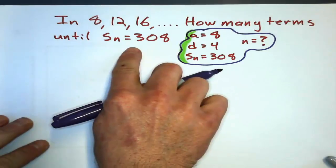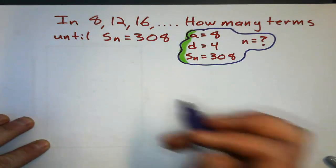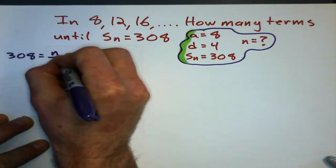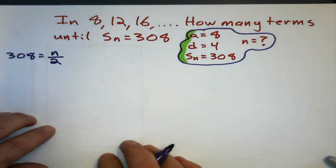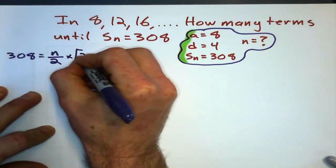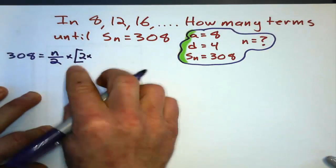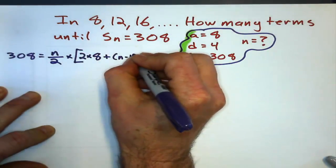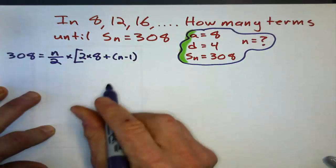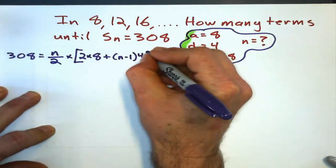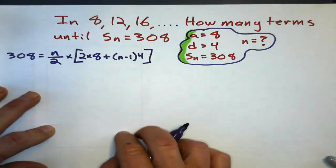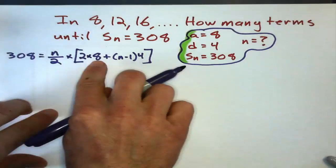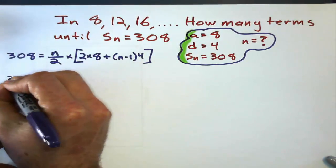S sub n is 308. So, 308 equals — I don't know what n is yet — times 2 times the first term, 8, plus n minus 1 times the common difference. What was the common difference? 4.